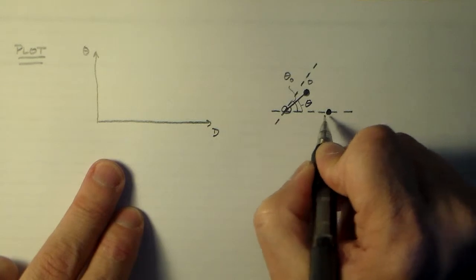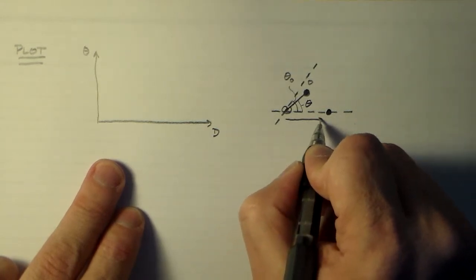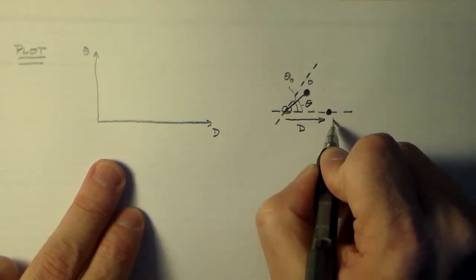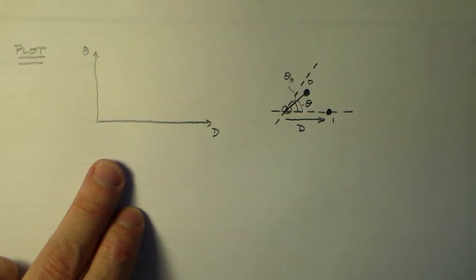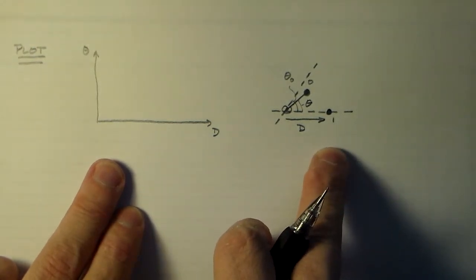And then this smaller angle is the angle theta that we're measuring. Then we're moving this source up and down along here. This is what I'm calling d, and that's our source point 1. So that's what we're looking at for what we're doing.